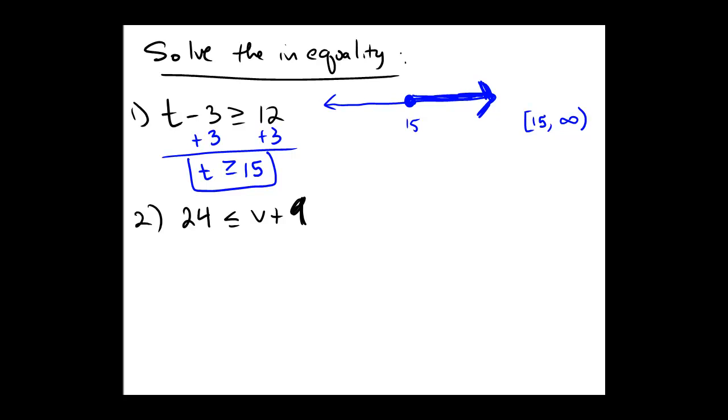Second example. 24 is less than or equal to v plus 9. This time the variable is on the right, so we'll subtract 9 from both sides. 24 minus 9 is 15, less than or equal to v.